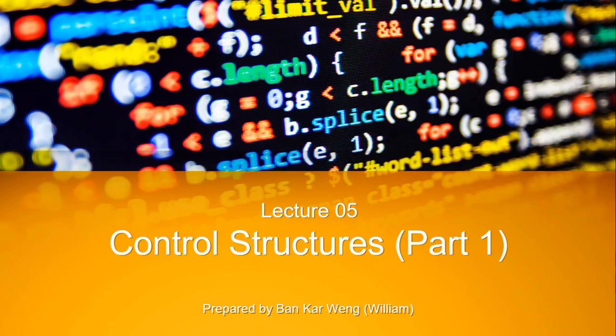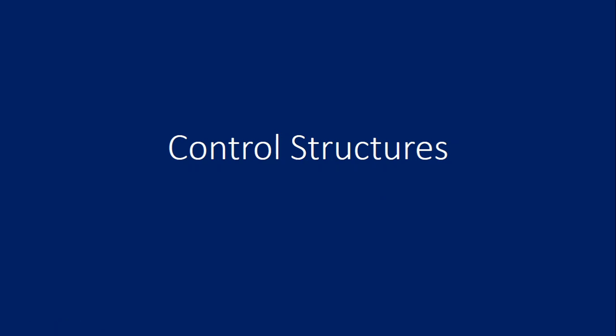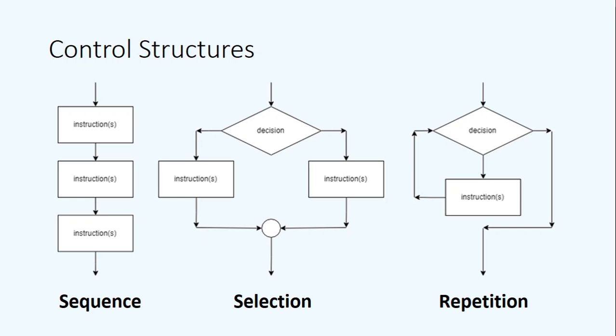We have also seen some ways of doing type conversion and output formatting. Today we're going to introduce one of the control structures for programming and we're going to start talking about the basics of what we call structured programming. There are three control structures that are part of a programming technique called structural programming, and they are the basic building blocks of what your program is going to contain.